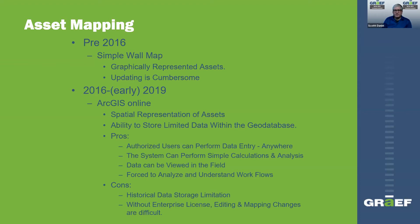From 2016 through 2019 they got into ArcGIS Online, which was great — it gave the crews access to GIS in the field, so they purchased a few tablets for the technicians to use. However, it was still somewhat limited; it really only showed current information. It got the utility to start looking at their workflows and analyzing how they were doing things and what they could do better. On the downside, only the latest data could be stored — no historical records. They still had duplicate data entry using Cartograph alongside ArcGIS Online, and without the enterprise license, editing and mapping changes were difficult.